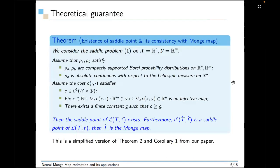So firstly, we introduce the existence of saddle point and its consistency with the Monge map. So if ρ_A and ρ_B are compactly supported and ρ_A is absolutely continuous with respect to the Lebesgue measure, and assume cost is continuous and the partial derivative of cost with respect to x is an injective map. And then there exists a finite constant such that the cost is lower bounded, then a saddle point of L exists. Furthermore, if T̂ and F̂ is a saddle point of L, then T̂ is the Monge map. This is a simplified version of theorem two and the corollary one from our paper. If you are more interested, you can check the paper for more details.